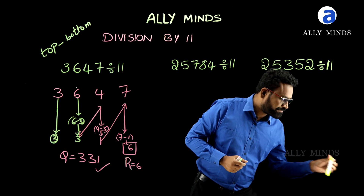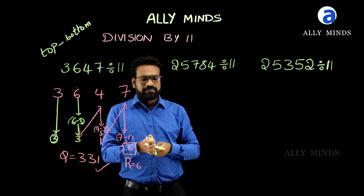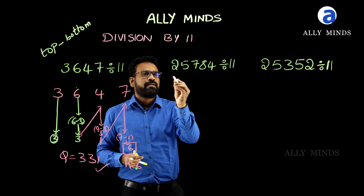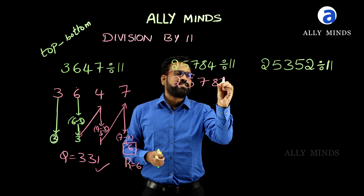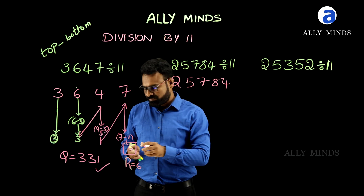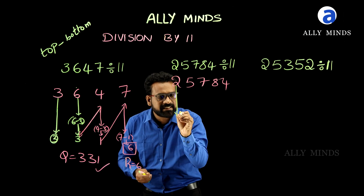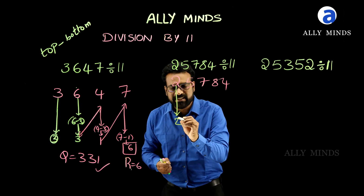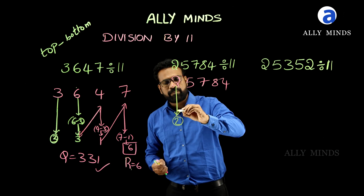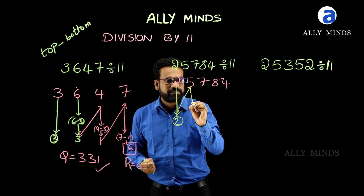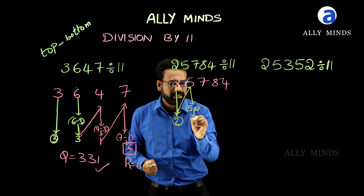Let us do one more problem. Write the given number — 25784 is our given number. First drop the first digit 2, and immediately subtract this bottom number 2 from the top number 5. 5 minus 2 is 3.